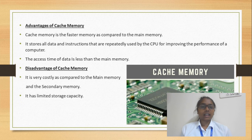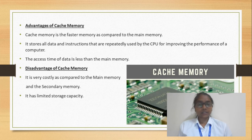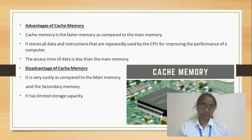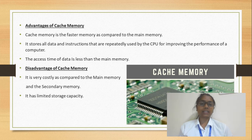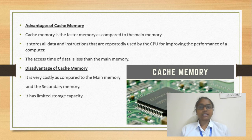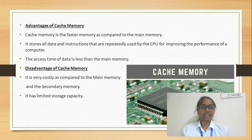Cache memory is faster compared to main memory. It stores all types of data and instructions which we use repeatedly, enhancing the performance of the CPU, and it reduces access time. The disadvantage is that it has limited storage capacity and it is very costly compared to main memory and secondary memory.